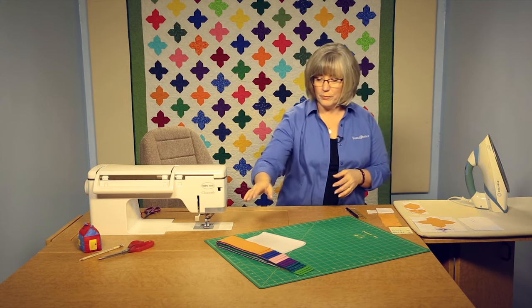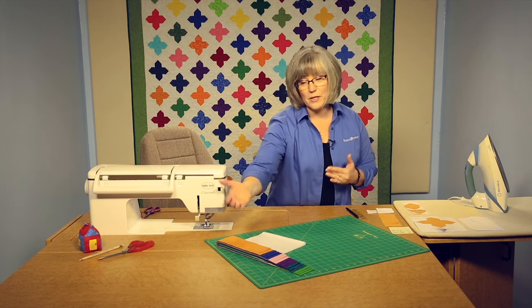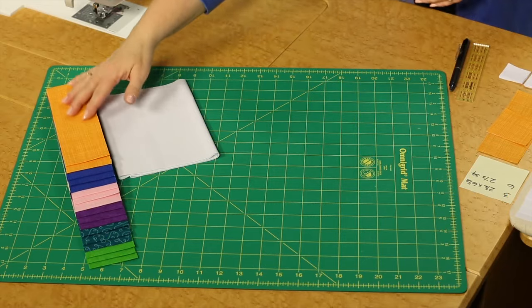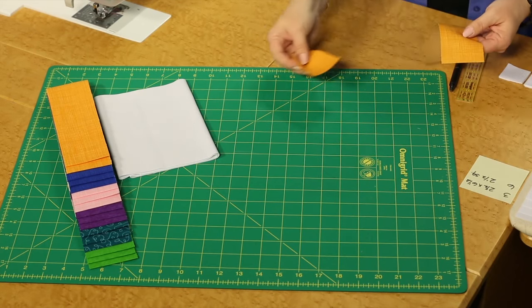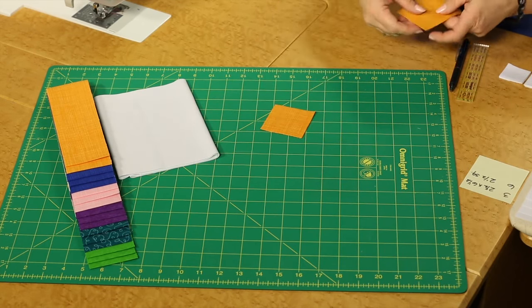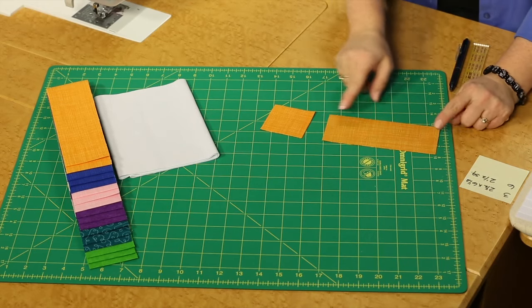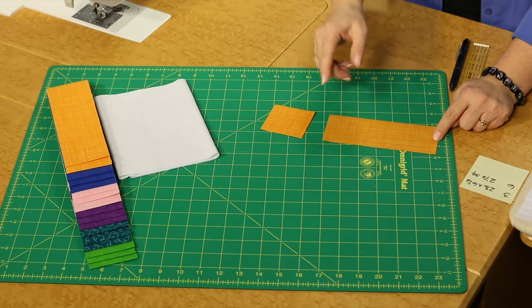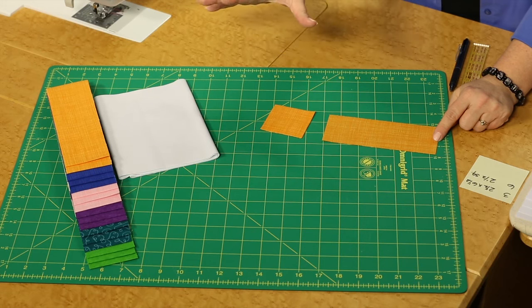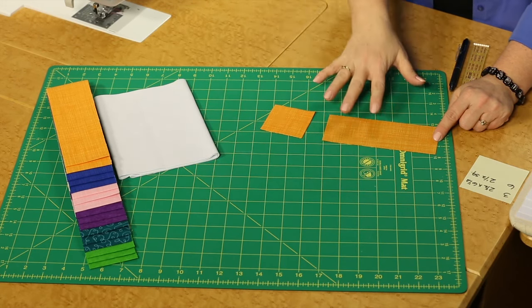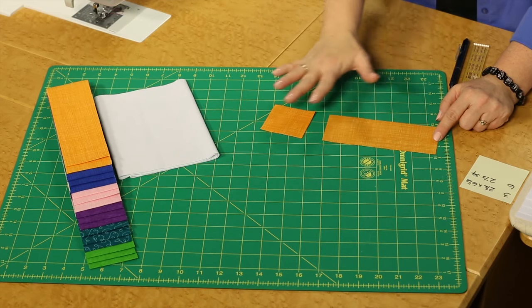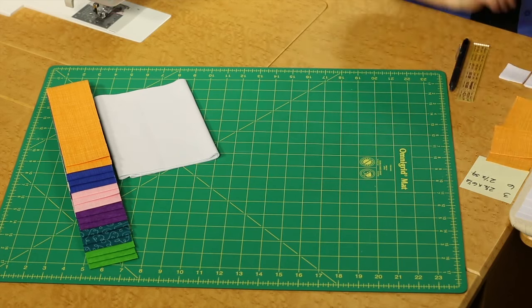In order to cut the pieces for this block, we're going to take each of the strips and from each strip we're going to be cutting six two and a half inch squares and three two and a half by six and a half inch rectangles. That way we'll use up all of the strip and have all the pieces that we need. So down through your pre-cuts, it'll tell you how many you'll need and set those aside so you can create your blocks.